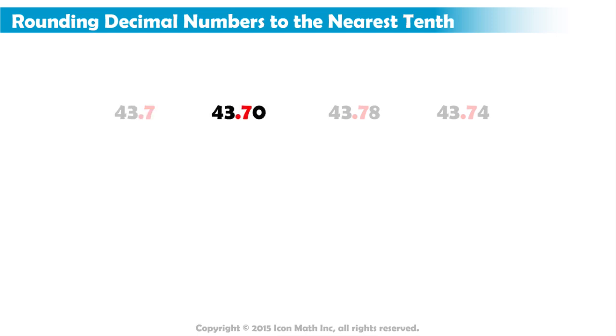Next is 43 and 70 hundredths. It is also the same as 43 and 7 tenths, because the zero represents no value, so we don't have to change this number either.